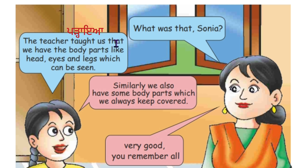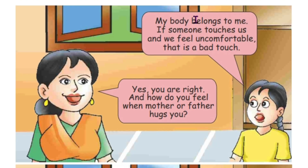The teacher taught us that we have body parts like head, eyes and legs which can be seen. Adhyapak ne saanu dasya si ki saadhe shreerde aanghan ji mein sir akhaan ate lattaan joke dekhe ja sakde han. Similarly, we also have some body parts which we always keep covered. Ae se tarahan saadhe shreerde kujh aanghan ji nanu asi hamesha taakke rakhde haan. Very good, you remember all. Bohut accha, tennoo sab yaad hai.